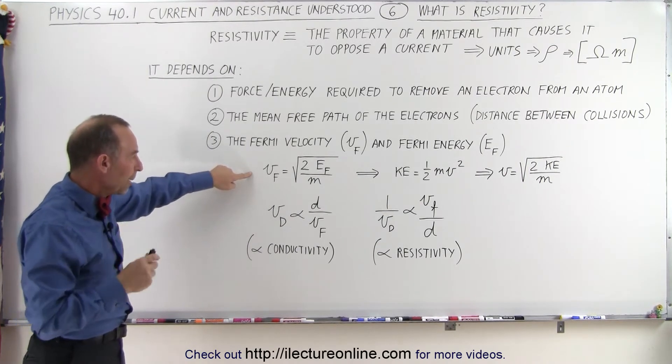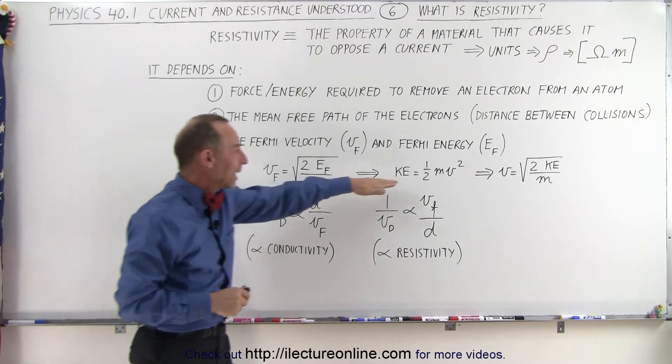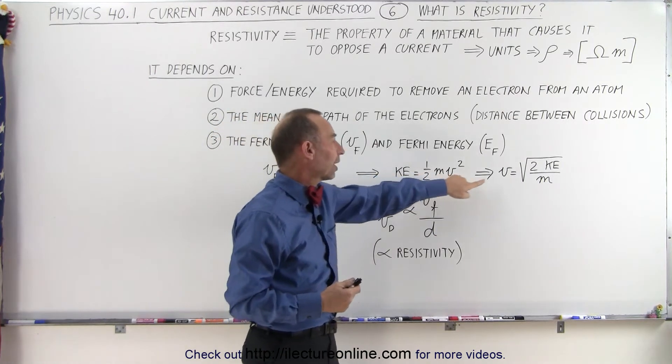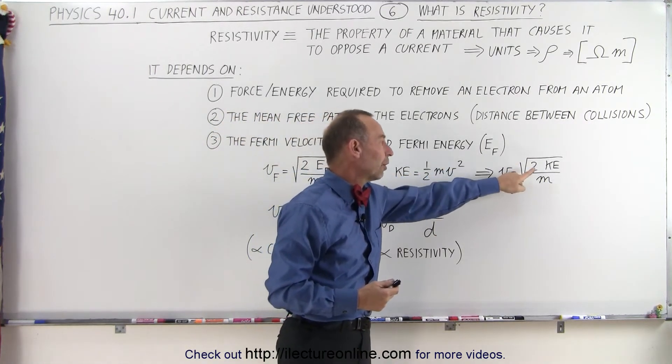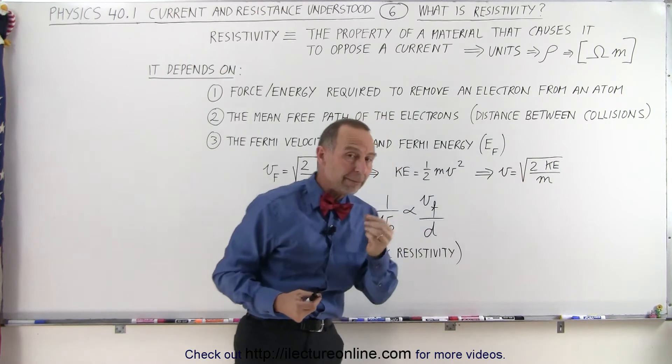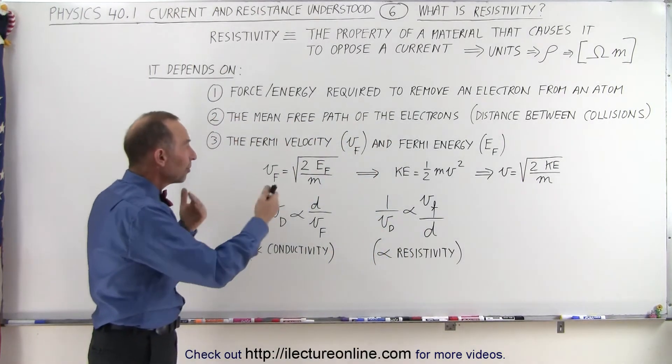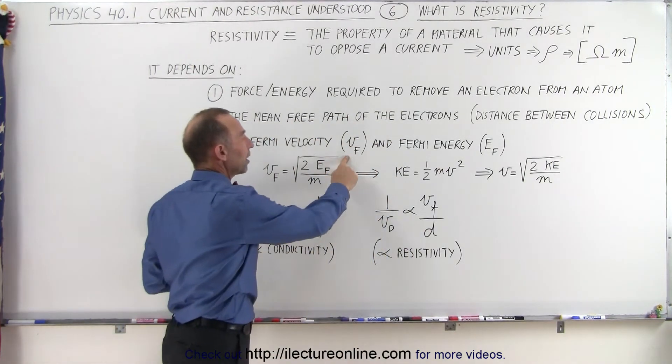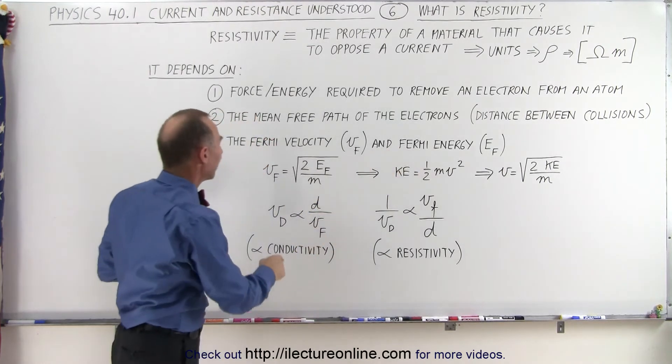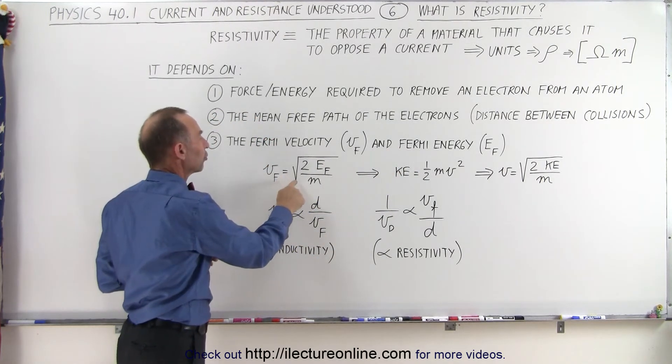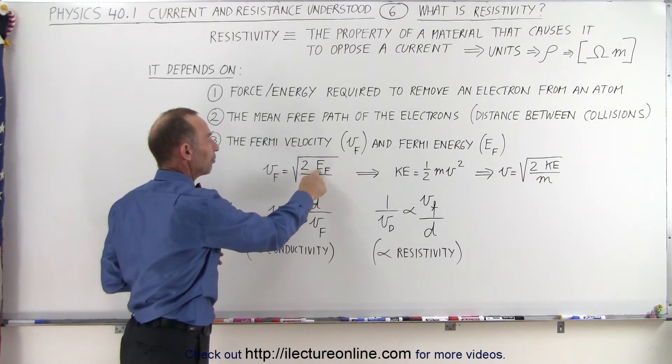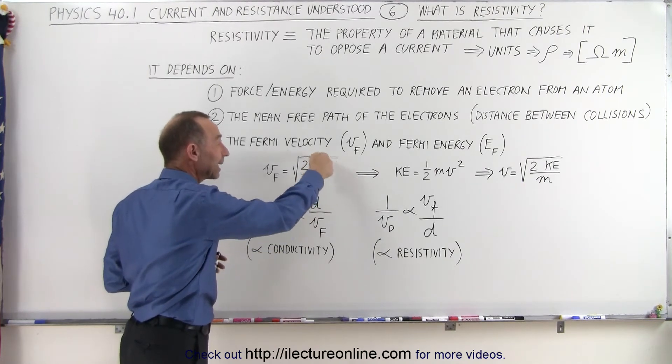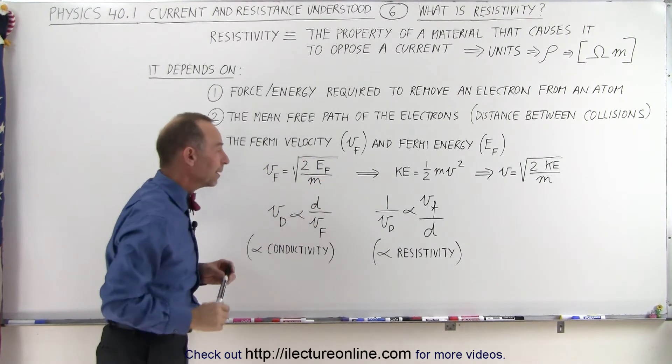So we remember that the kinetic energy of a particle is one half mv squared, so that the velocity is equal to the square root of twice the kinetic energy divided by the mass of the particle. There's a similar relationship between the Fermi velocity and the Fermi energy in that the Fermi velocity is equal to the square root of twice the Fermi energy, which is basically kinetic energy of the particles divided by the mass.